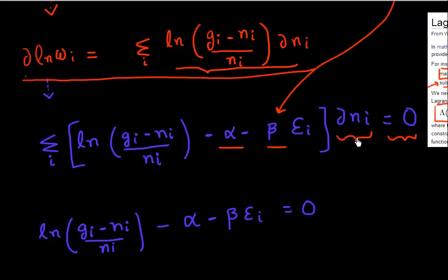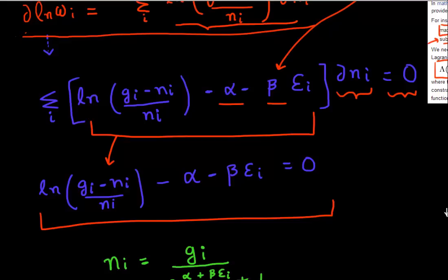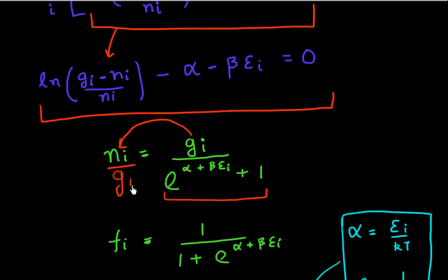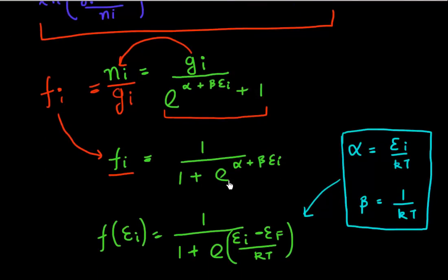This has to be zero for any given distribution of ni, so each term individually has to be zero. What I get is essentially a log of this term, which is equivalent to a constant plus beta times the energy of my particle. Rearranging to get rid of the log, ni is now related to the total number of states gi, divided by 1 plus e to the power (alpha + beta*Ei). And ni divided by gi is my probability of occupation, given by 1 divided by 1 plus this exponential function.